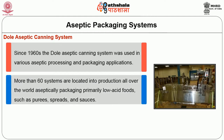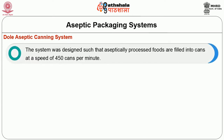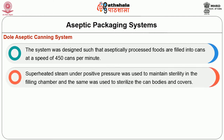More than 60 systems are located all over the world, primarily for low acid food such as purees, spreads, and sauces. Currently there are almost 40 Dole canners functioning. The only system available to pack aseptically processed products into metal cans is Dole. The system was designed to fill aseptically processed foods into cans at a speed of 450 cans per minute. Superheated steam under positive pressure is used to maintain sterility in the filling chamber and to sterilize the can bodies and covers.